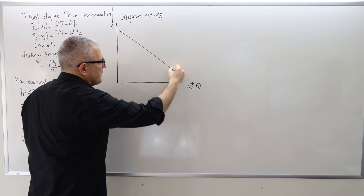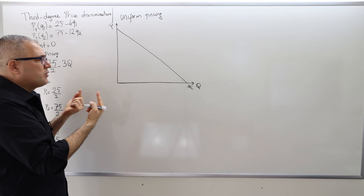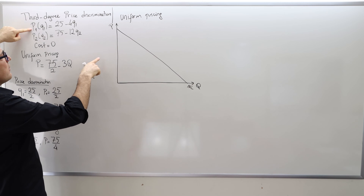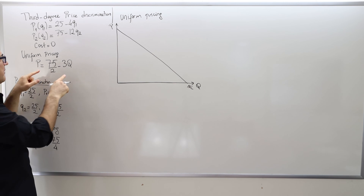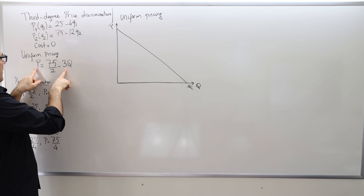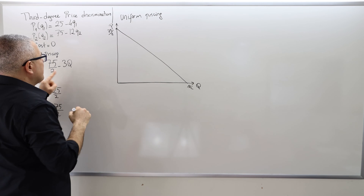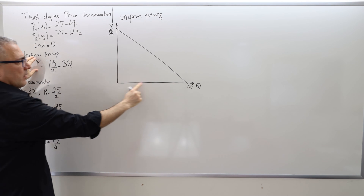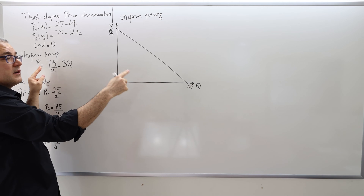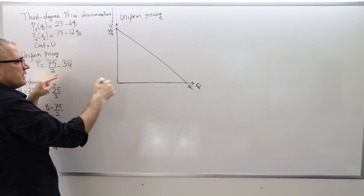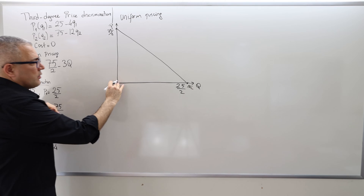The demand curve is linear. Let's find the intercepts because we're going to use them to calculate the surpluses. Under uniform pricing we look at the aggregate demand. When quantity is zero, the maximum price is 75/2 — so that's the vertical intercept. When P is zero, the horizontal intercept is Q = 75/6, which simplifies to 25/2.